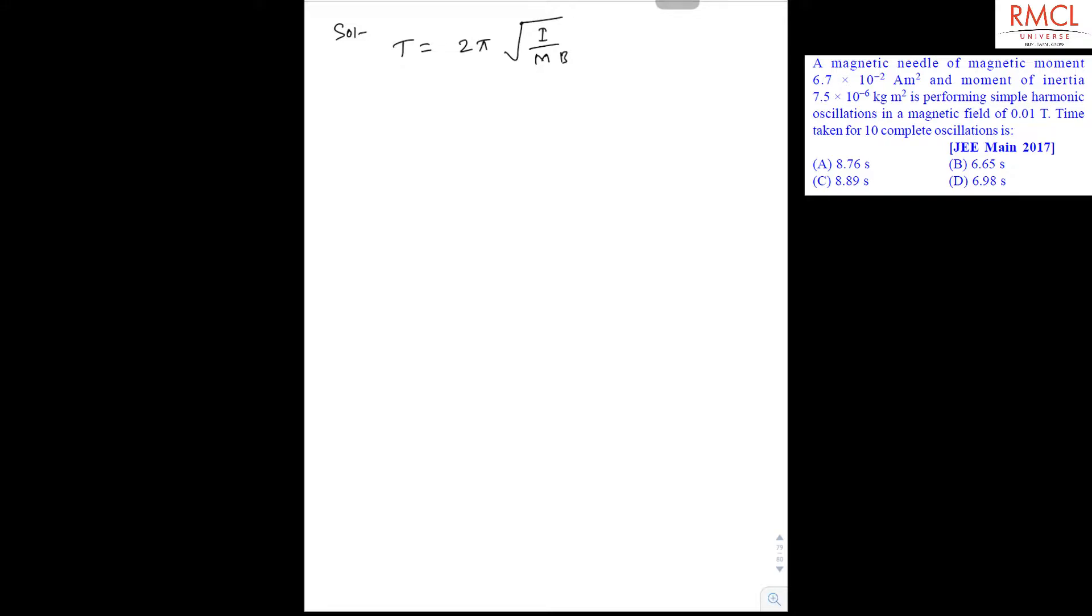So if you find the time period, it will be 2π under root, magnetic moment is 6.7 × 10⁻² and moment of inertia is 7.5 × 10⁻⁶.